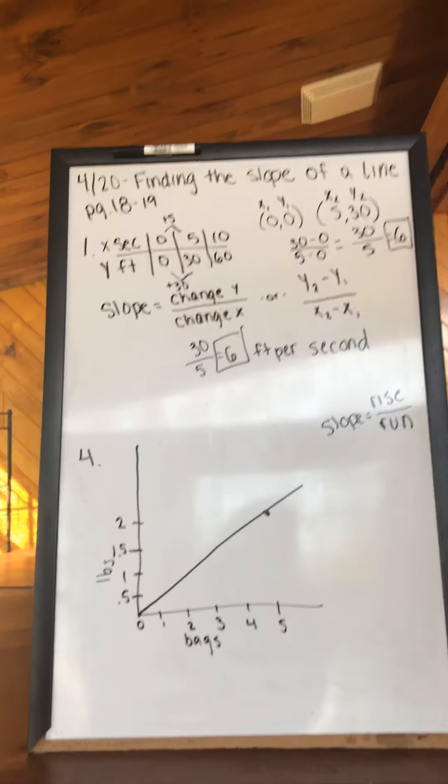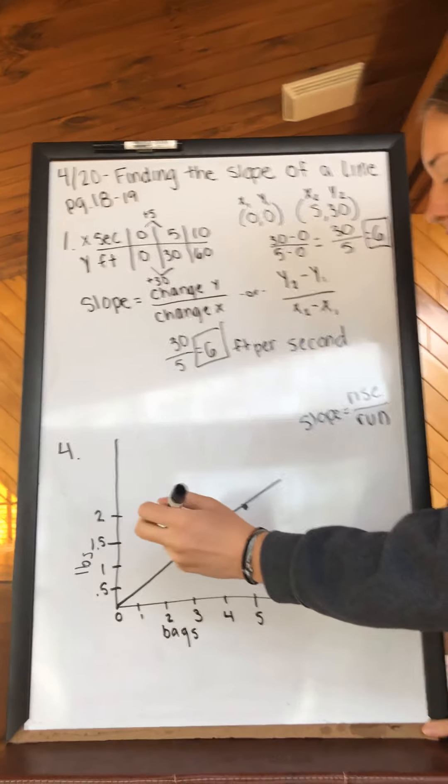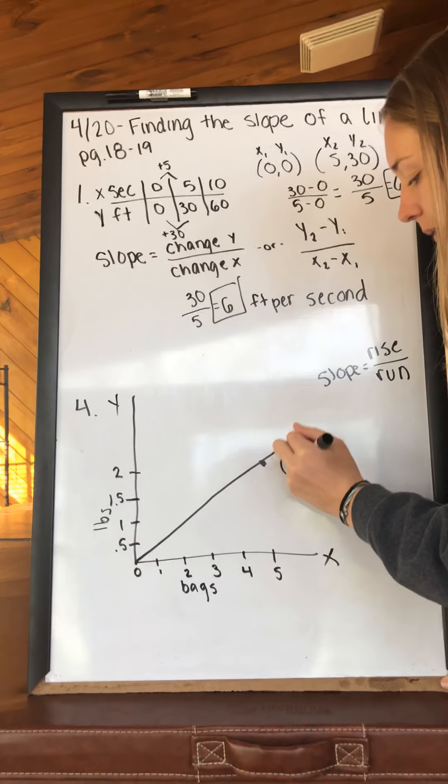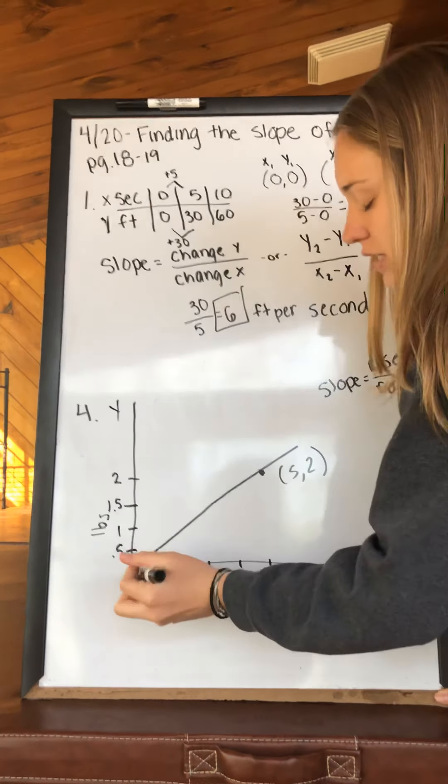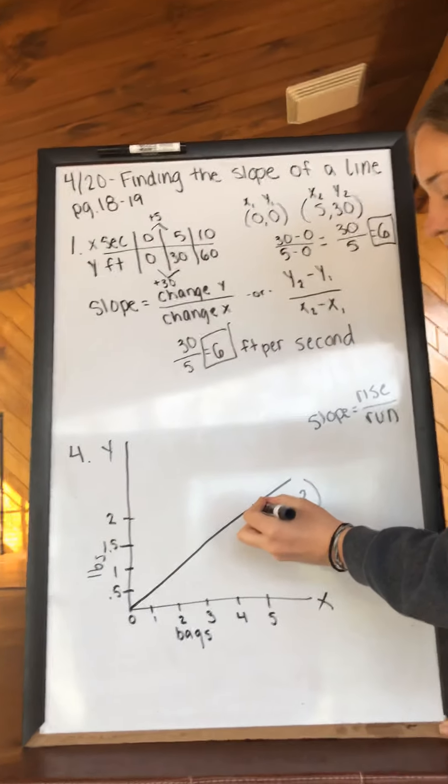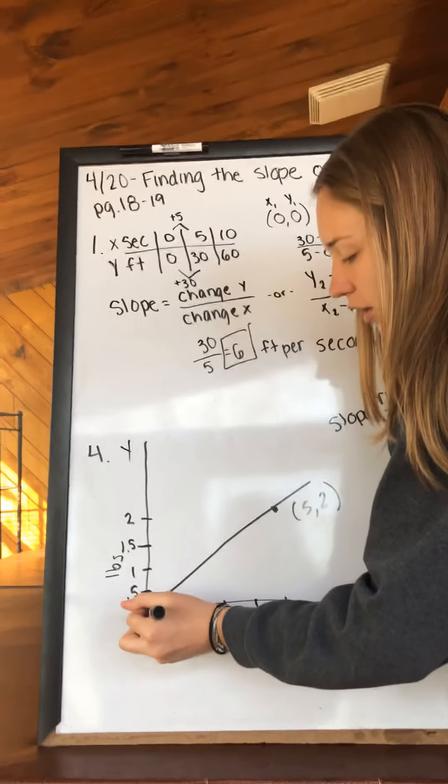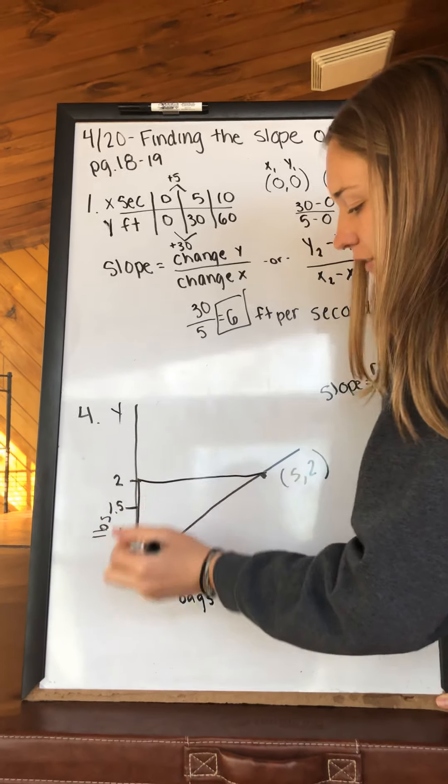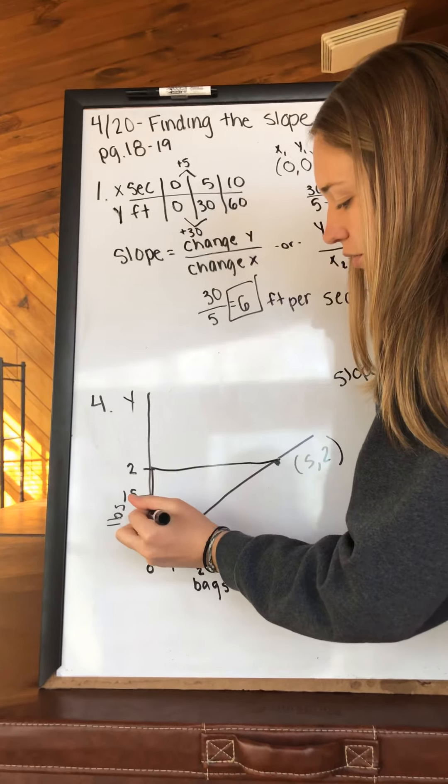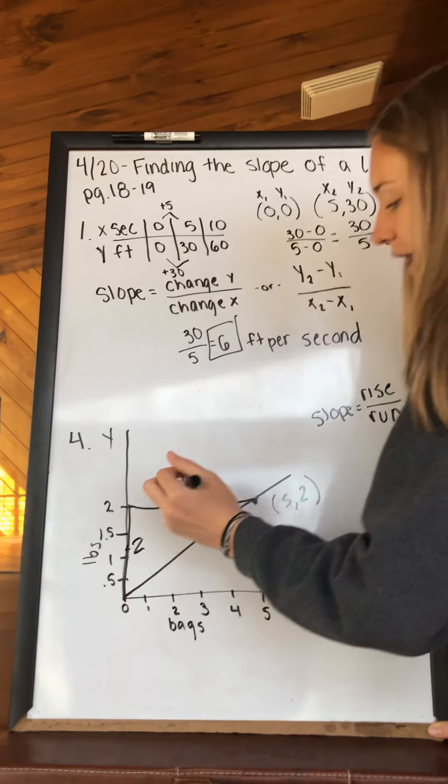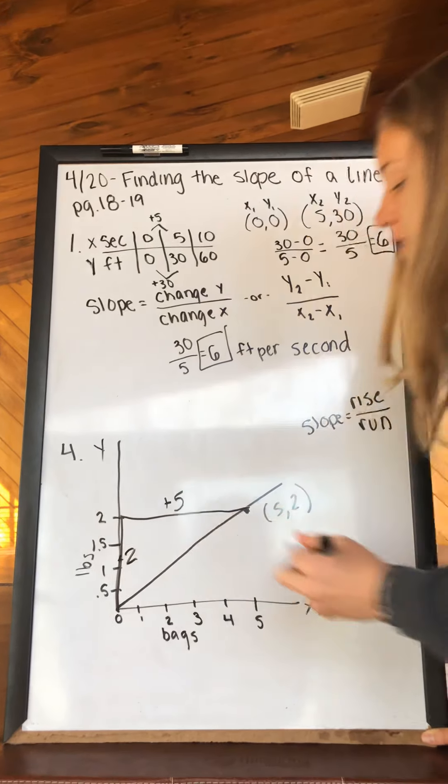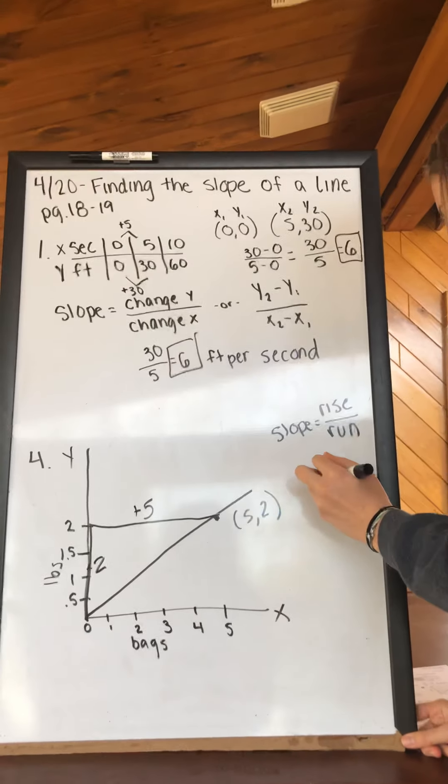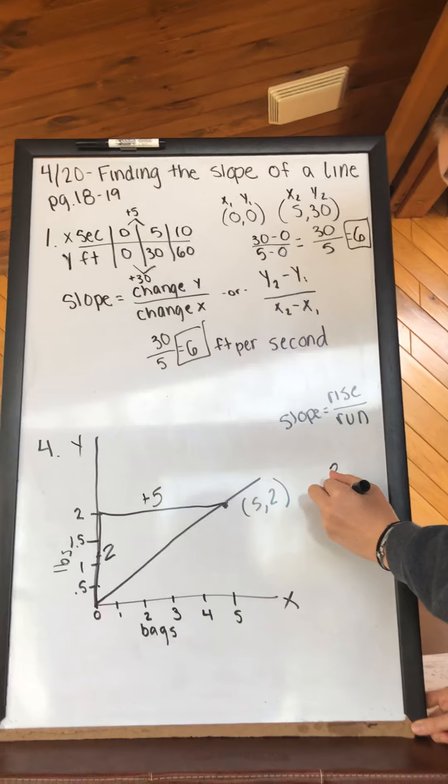So one of the points that I see on the graph is (5, 2). So to get to this point, which is directly on the line, we are going to rise 2 and run 5. We went up 2, which was positive, and we ran 5, which was positive.